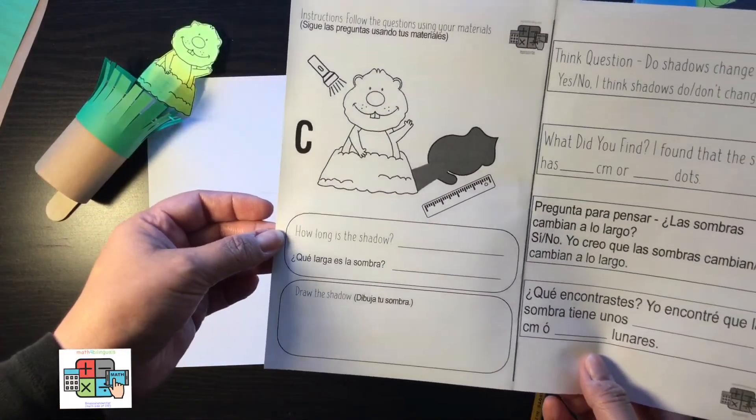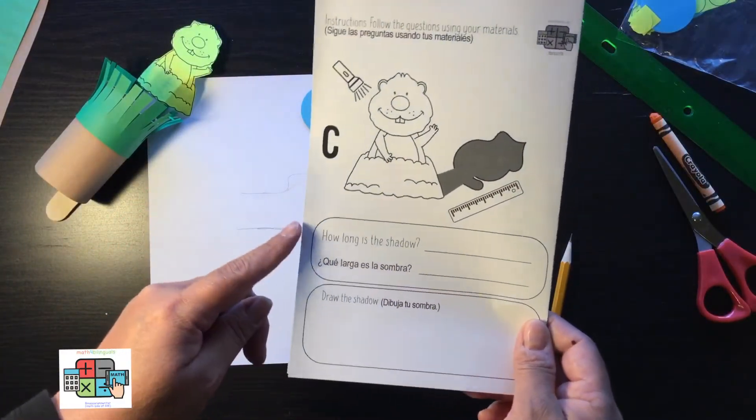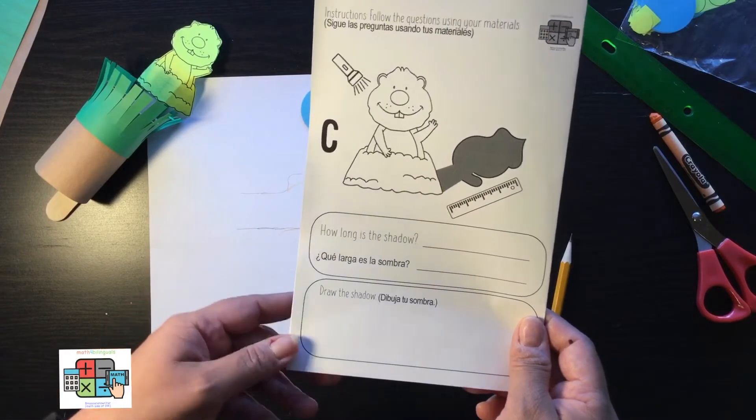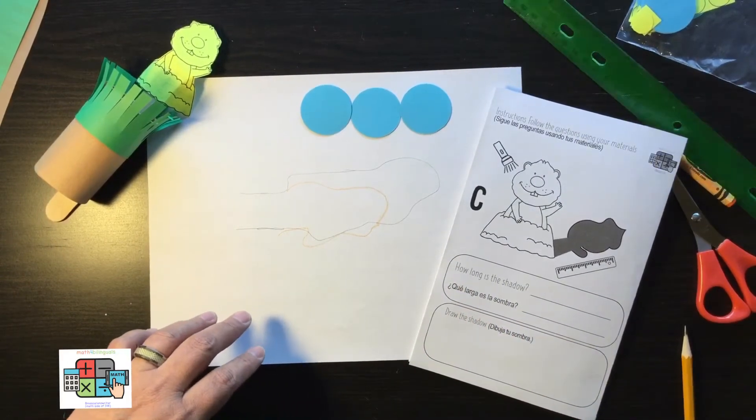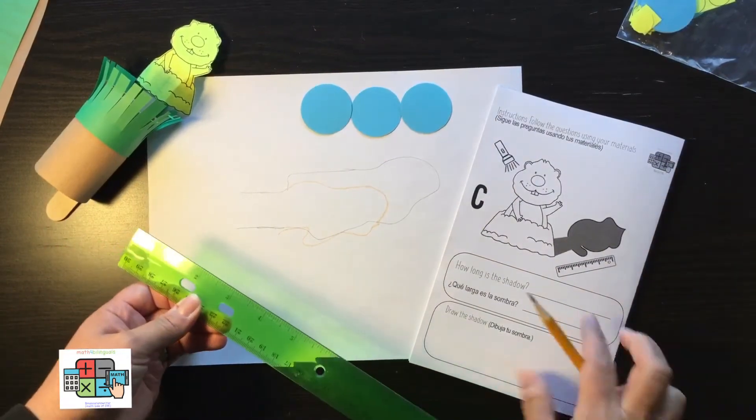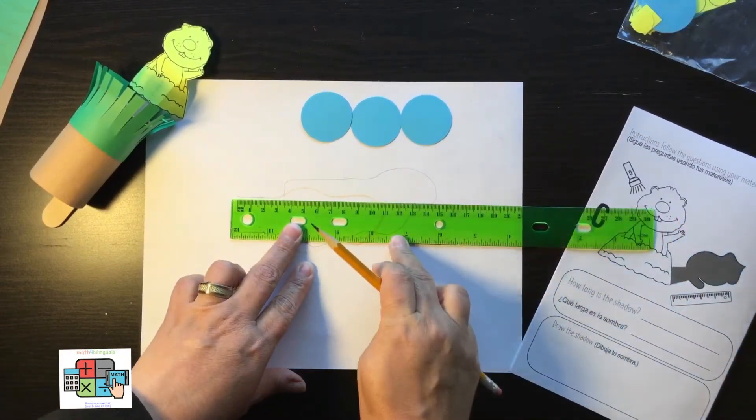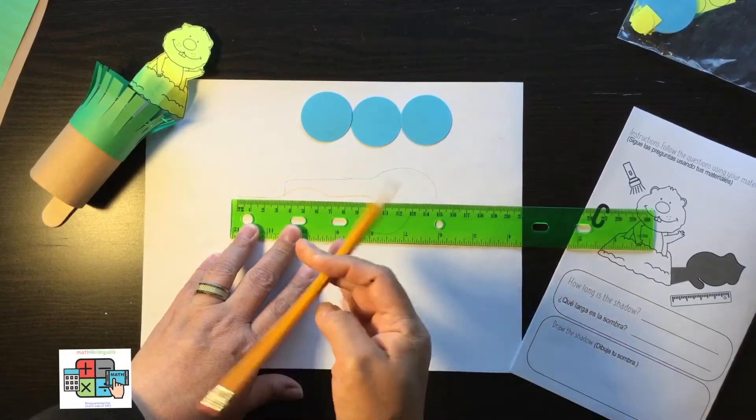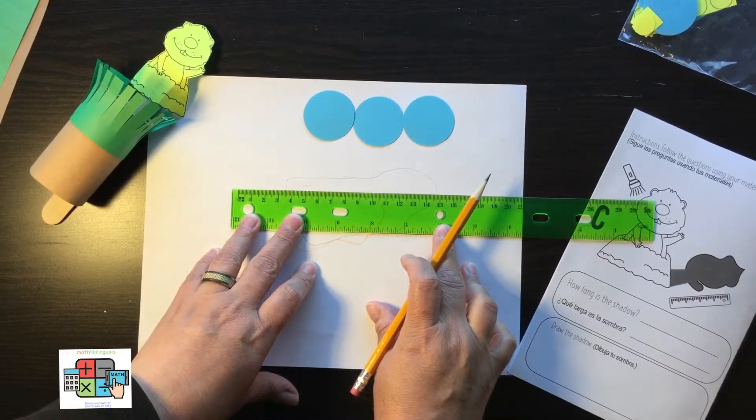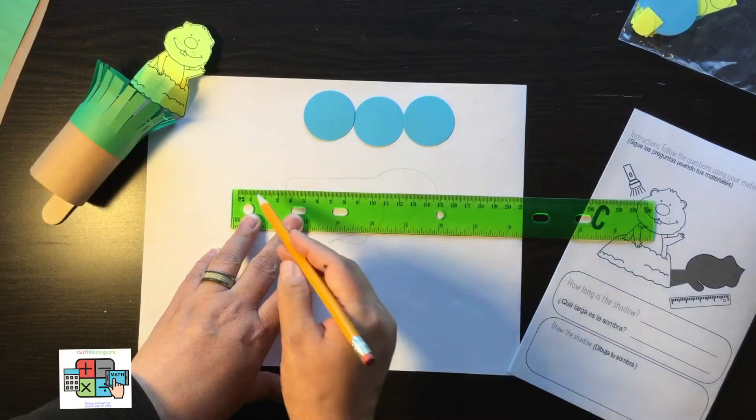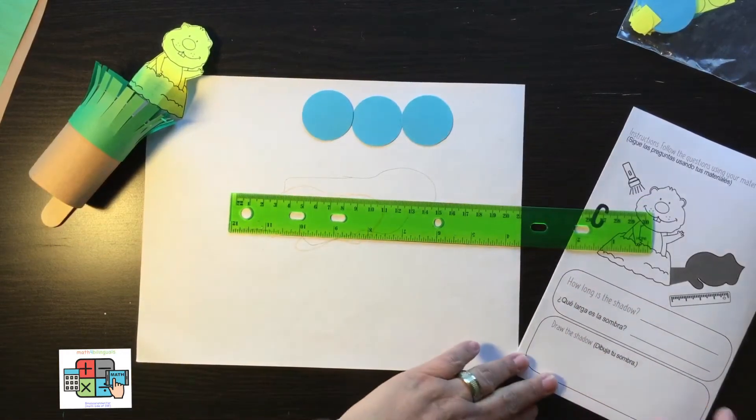On this side you have collecting your experiment. How long is the shadow? Qué larga es la sombra? Let's go ahead and do that. I'm going to do it both ways. I'm going to take my ruler and measure in centimeters from where my little groundhog came out to the longest part. You can make an estimate—it doesn't have to be exactly 14.8, but it's approximately 15 centimeters.